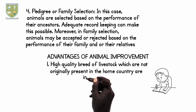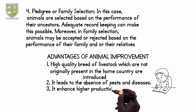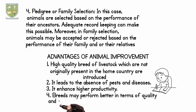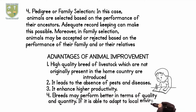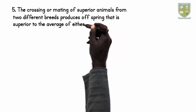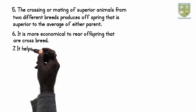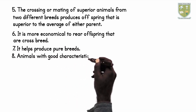Advantages of Animal Improvement. 1. High quality breeds of livestock which are not originally present in the home country are introduced. 2. It leads to the absence of pests and diseases. 3. It enhances higher productivity. 4. Breeds may perform better in terms of quality and quantity if able to adapt to the local environment. 5. The crossing or mating of superior animals from two different breeds produces offspring that is superior to the average of either parent. 6. It is more economical to rear offspring that are crossbred.